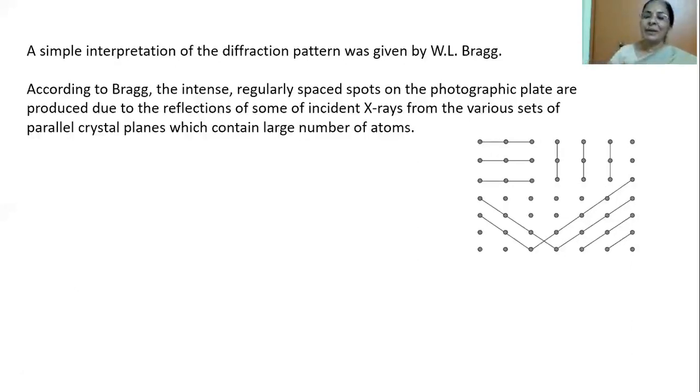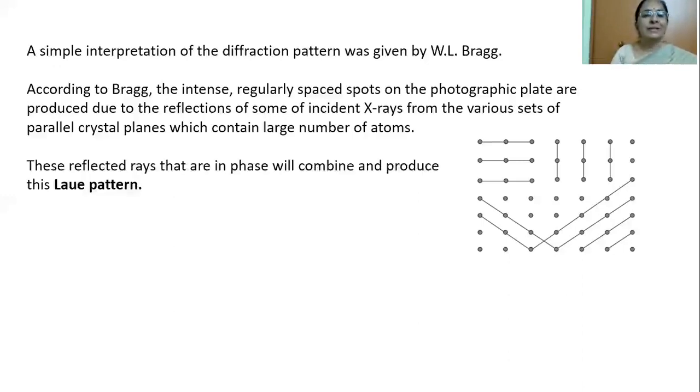If you compare this two-dimensional figure, you can see this plane is having more number of atoms. So, Bragg suggested that the pattern which we got on the photographic film could be the reflection made by the planes in the crystal, which are very rich in atoms. These reflected rays that are in phase will combine and produce this Laue pattern.